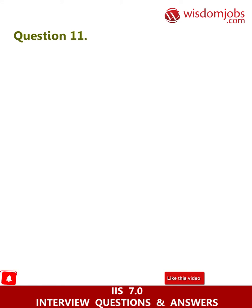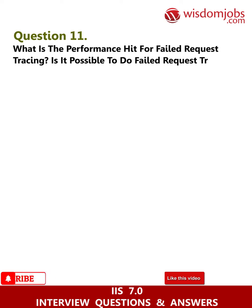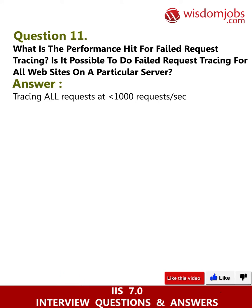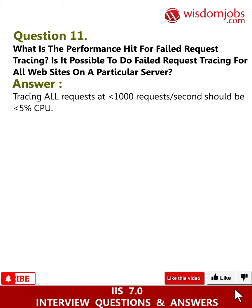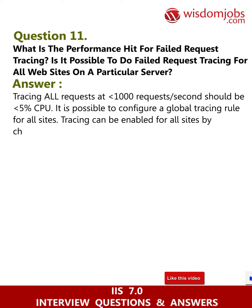Question 11: What is the performance hit for failed request tracing? Is it possible to do failed request tracing for all websites on a particular server? Answer: Tracing all requests at less than 1,000 requests per second should be less than 5% CPU. It is possible to configure a global tracing rule for all sites. Tracing can be enabled for all sites by changing the site defaults section.